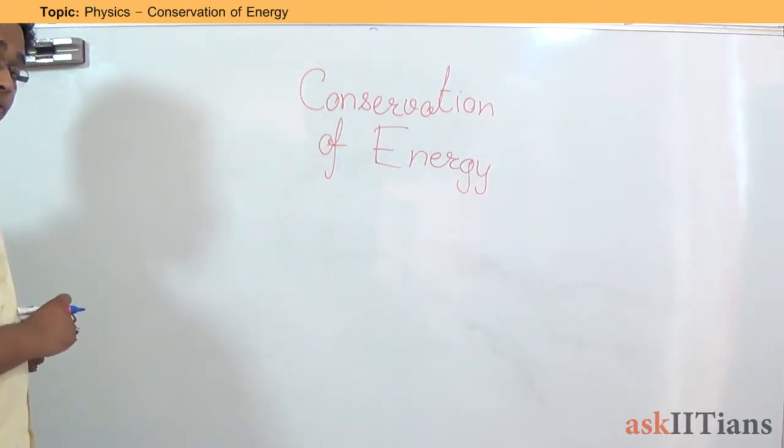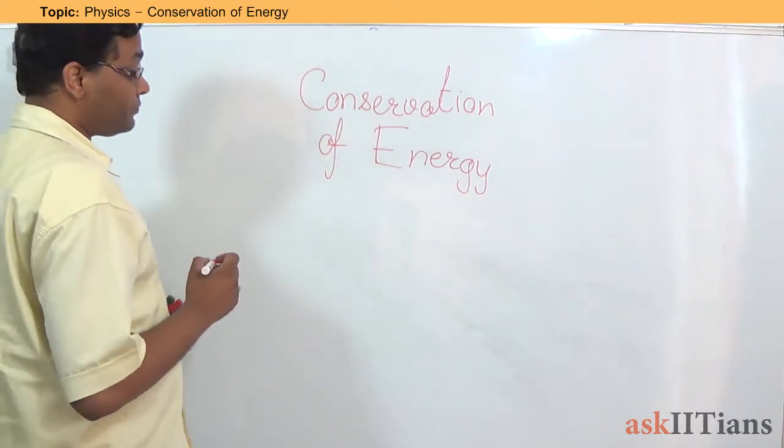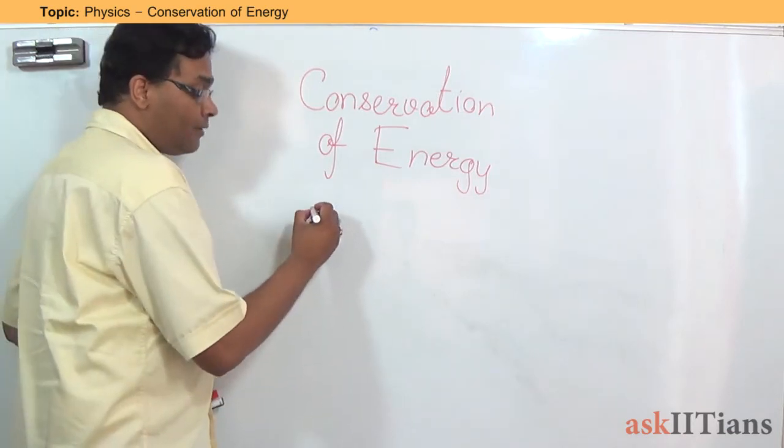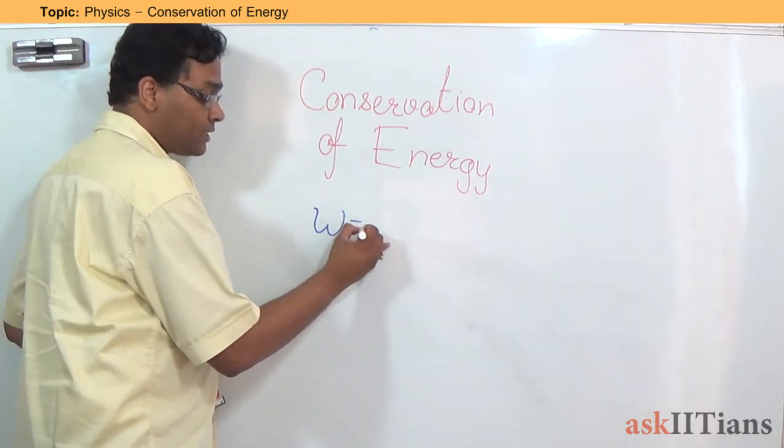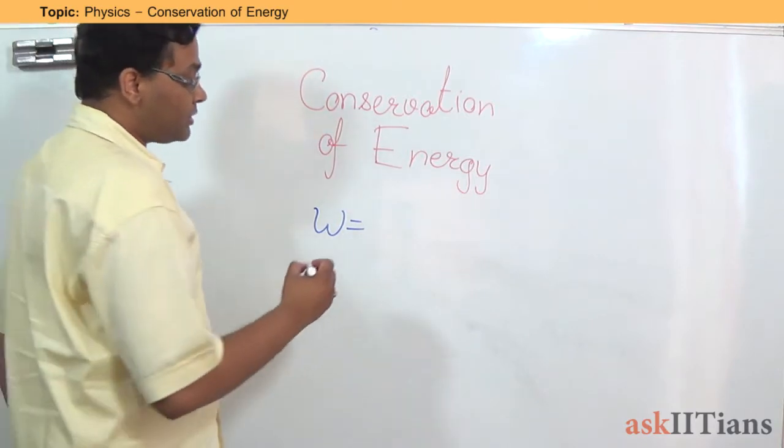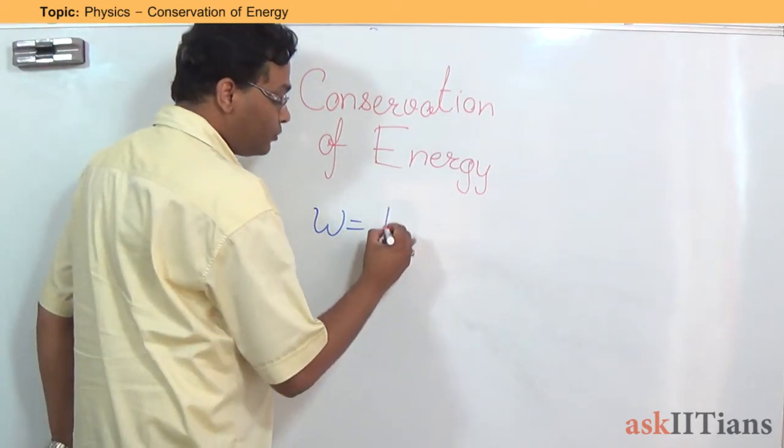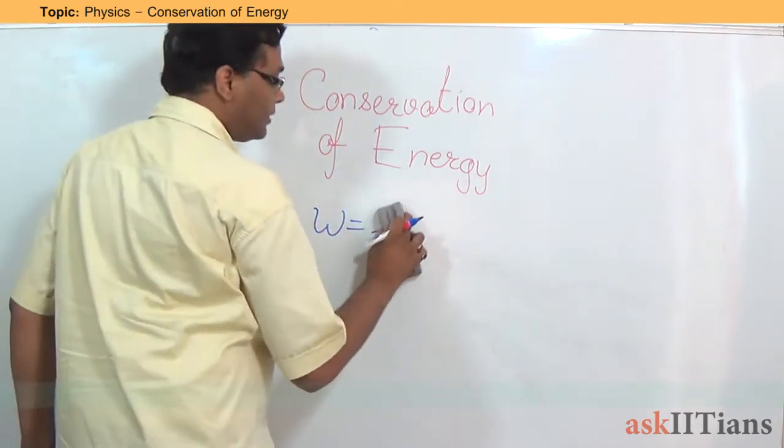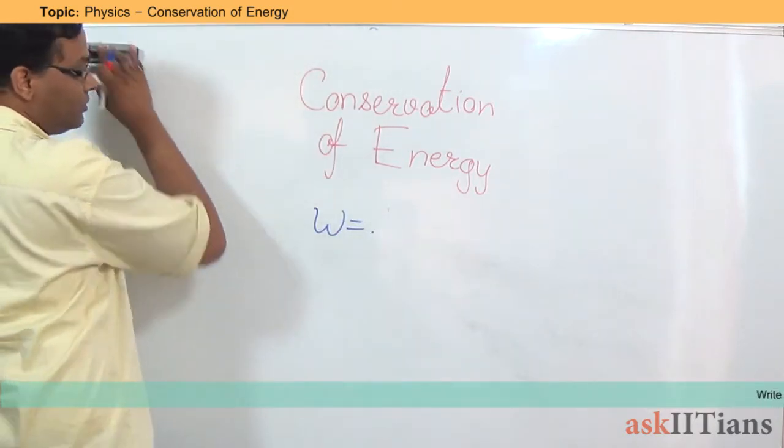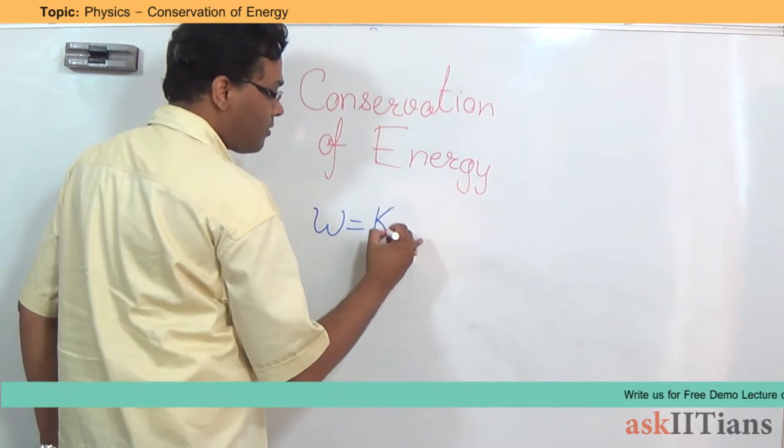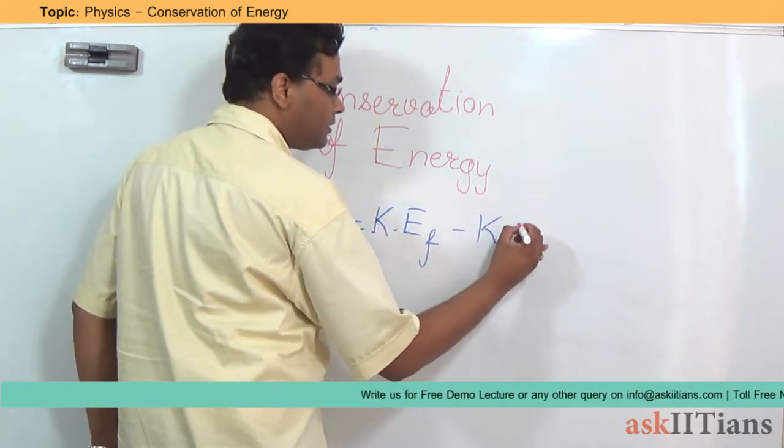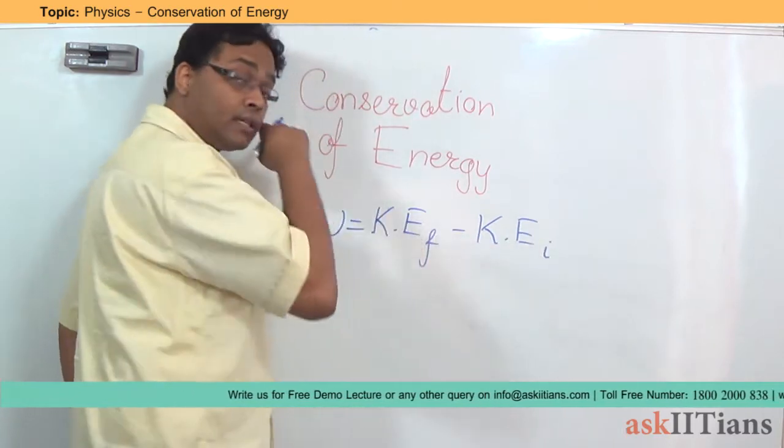So when we are talking about the conservation of energy per say, so according to the conservation of energy, we have, first let's use the work energy theorem. The work energy theorem states that W is equal to the final kinetic energy minus the initial kinetic energy.